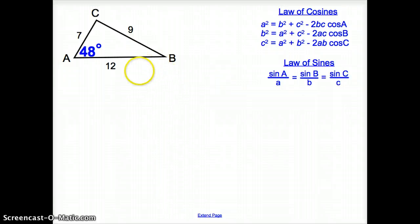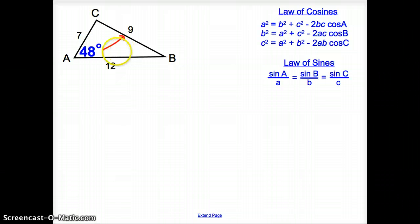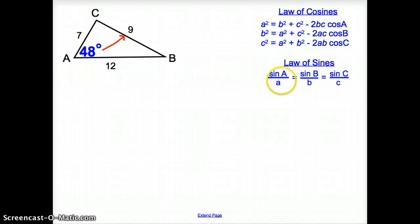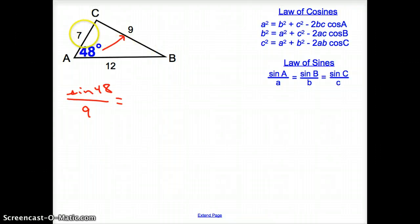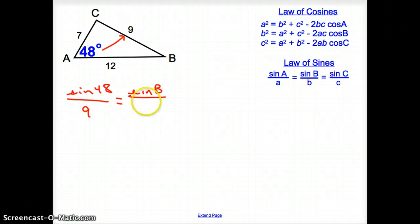I'm going to move on to the next page for more room. Here is our triangle. We already found angle A, and we have side A. So when we have an angle and a side across from it, let's go ahead and use the Law of Sines. I'm going to use sine of 48 over 9 — because the side across from angle A is 9. Now I could pick B or C, but I'm going to pick angle B because we know side B is 7. So it's going to be sine B over 7.